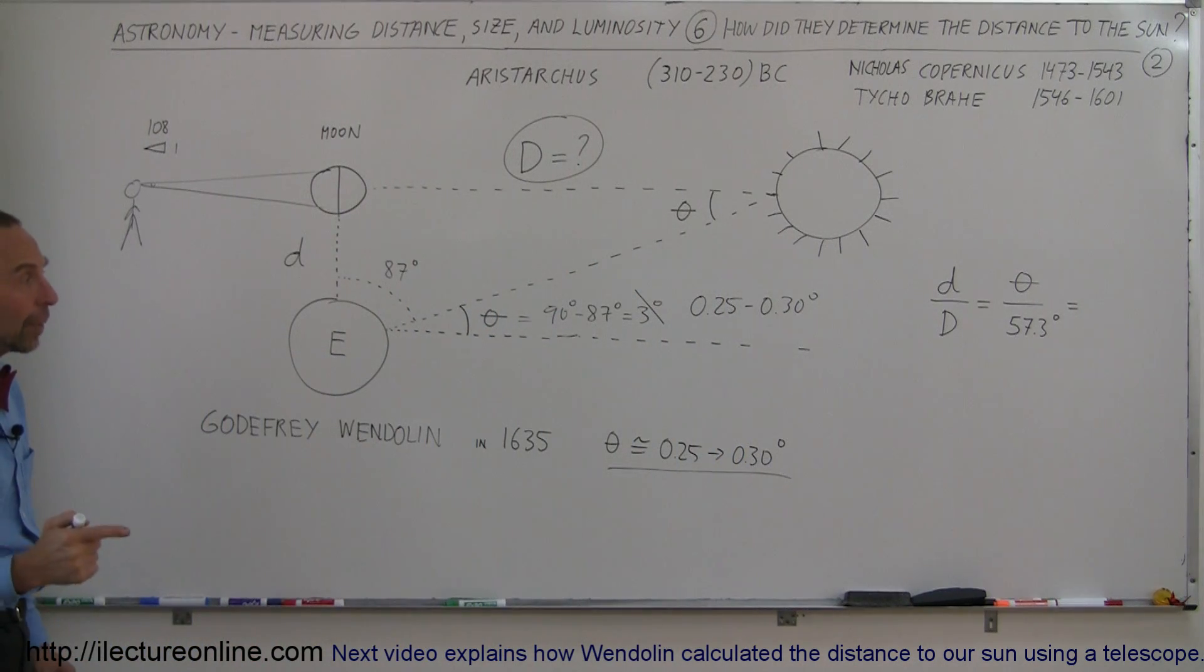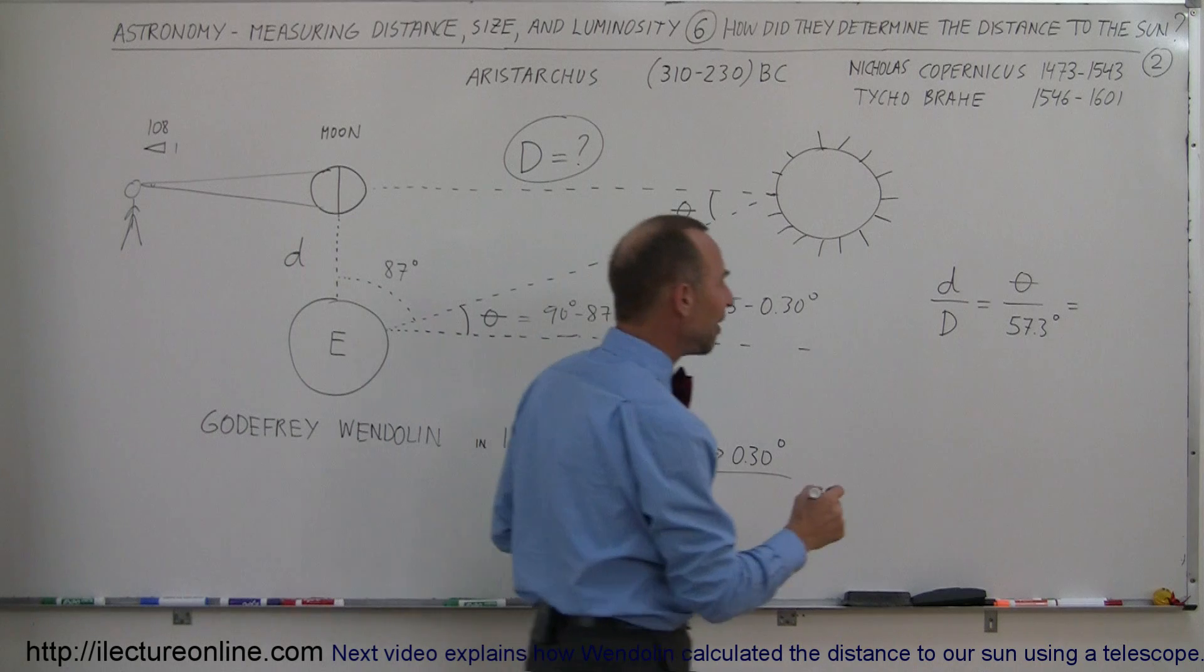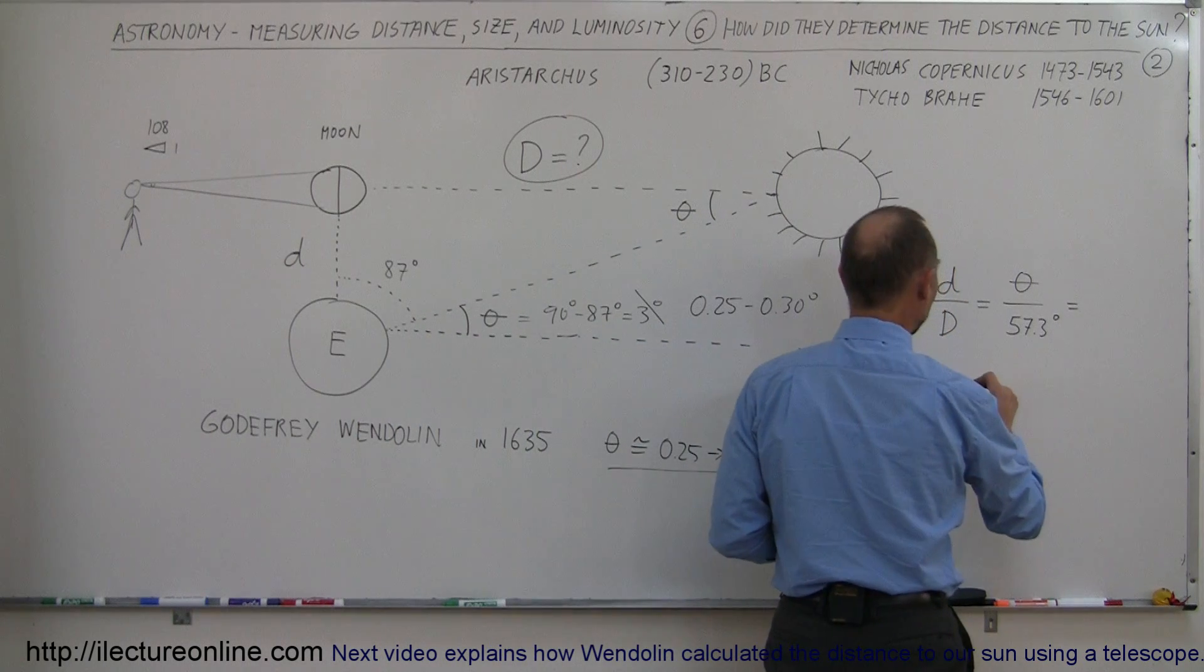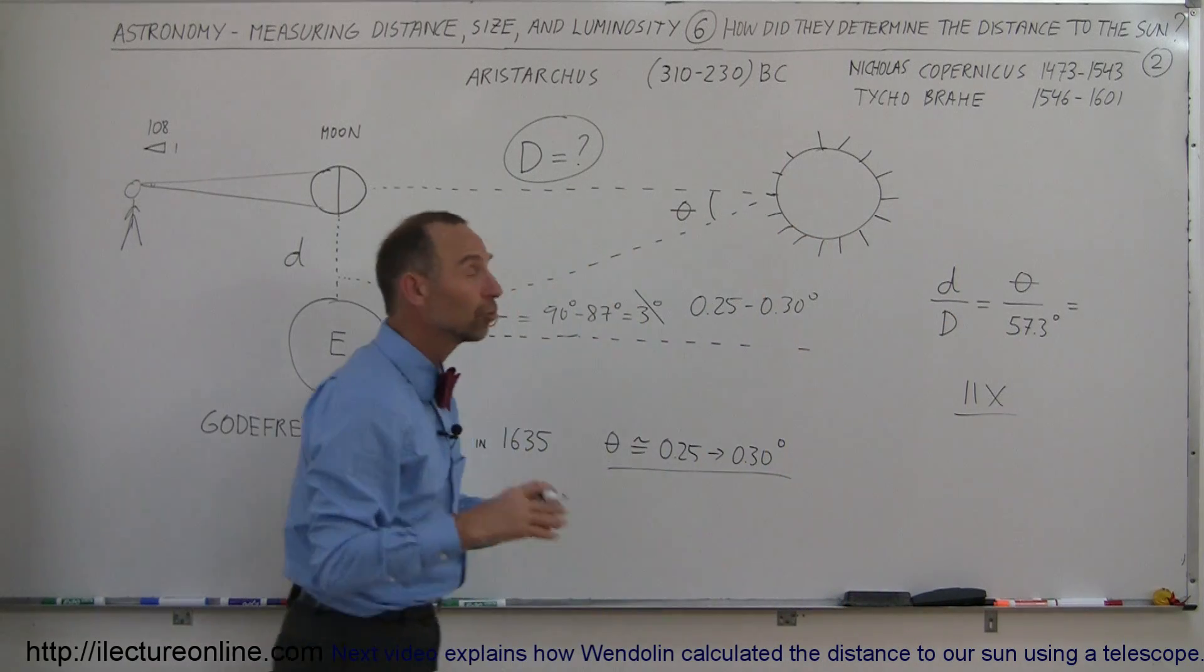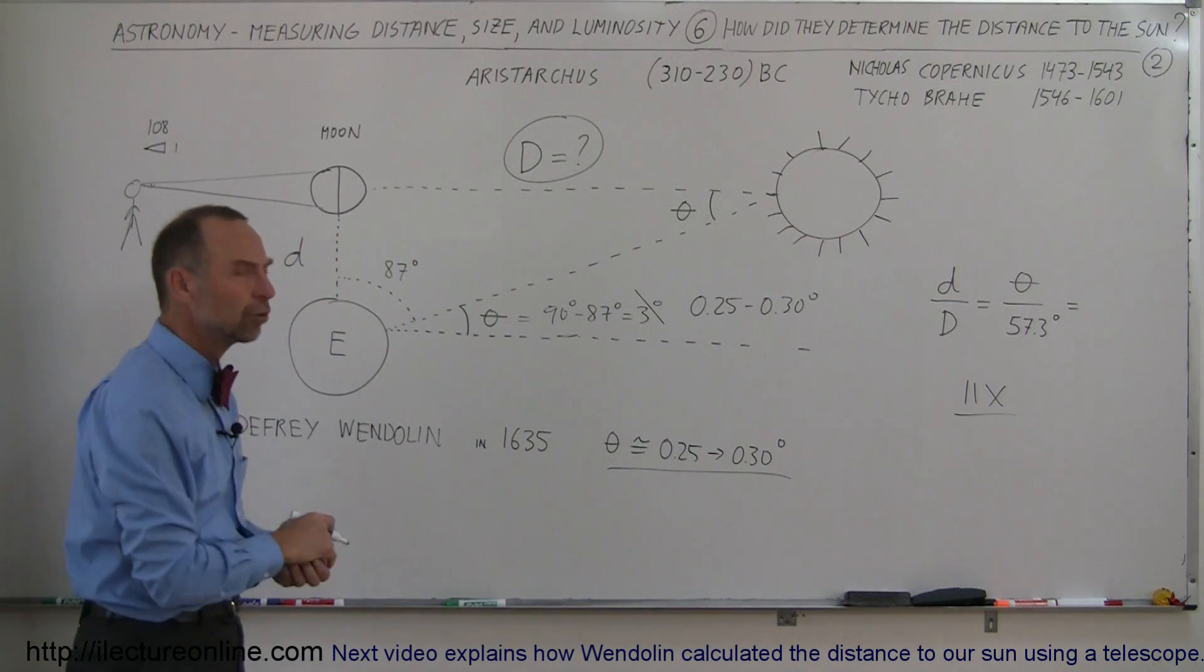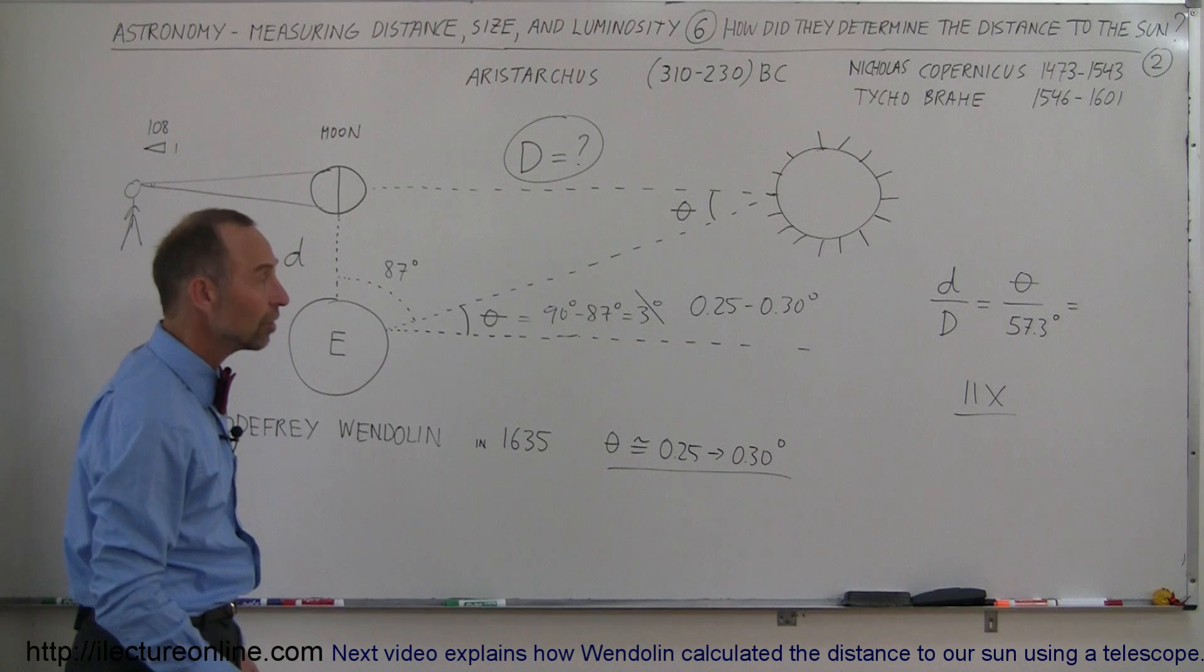And so then when he went in and compared that to the measurement that had been made before, he said, wow, we were off by about a factor of 11. He figured out that the sun was about 11 times as far away as had previously been assumed based upon these earlier measurements that had been valid for almost 2,000 years.